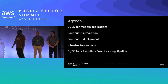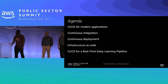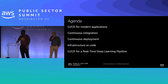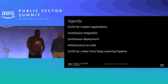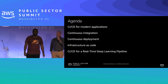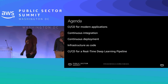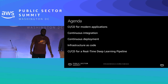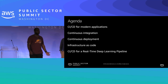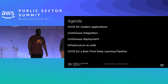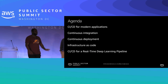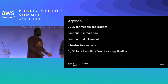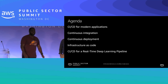First, I'm going to talk about CICD for modern applications — continuous integration, continuous deployment, and infrastructure as code, which are some of the pillars you need. I'll also talk about what exactly a modern application is. Then Justin and Troy are going to get into detail about how they've leveraged AWS for their CICD pipeline for a really exciting deep learning use case. We'll try to answer as many questions as we can at the end, and we'll be available after the talk as well.